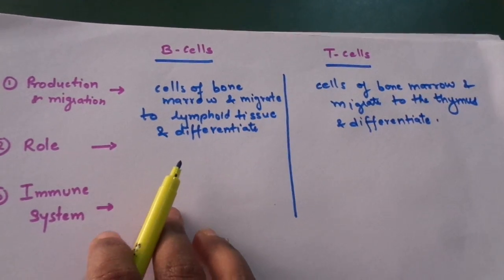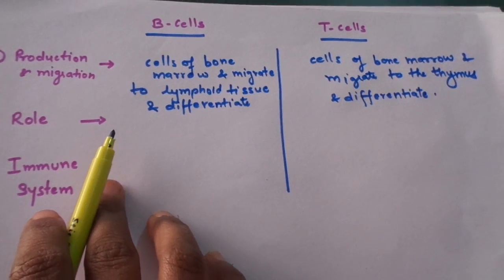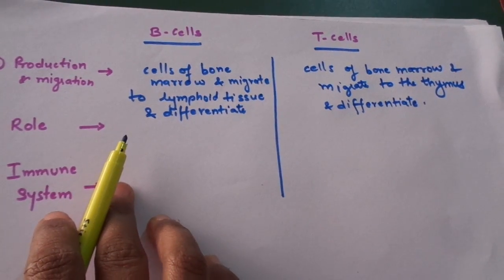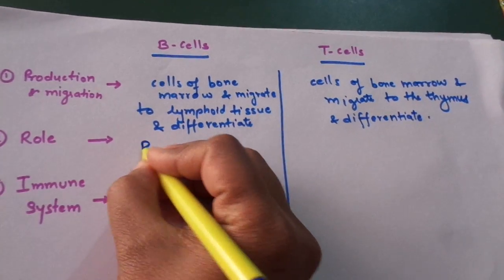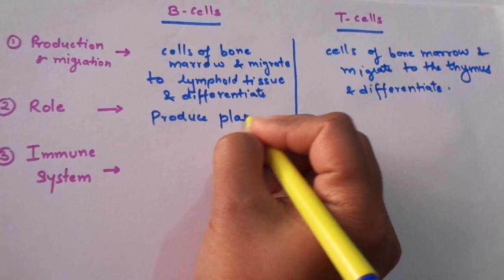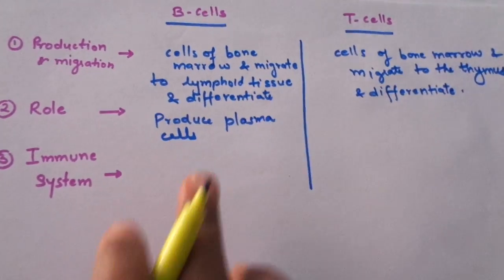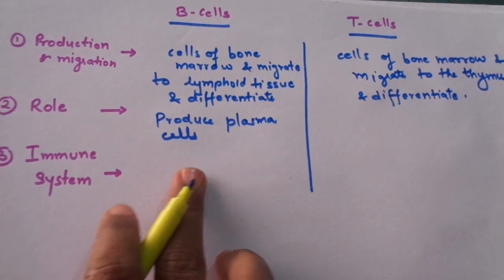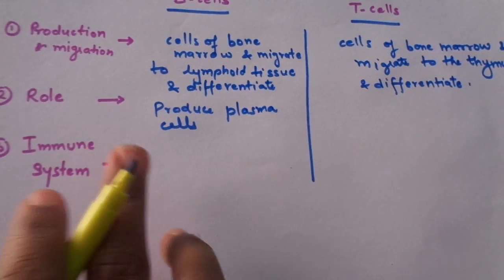Next comes the second difference between B cells and T cells, which is a very important point: the role of these cells. B cells produce plasma cells once they are triggered by antigens.